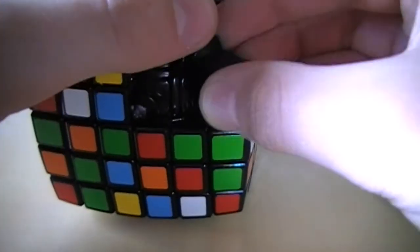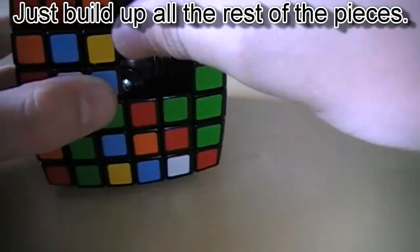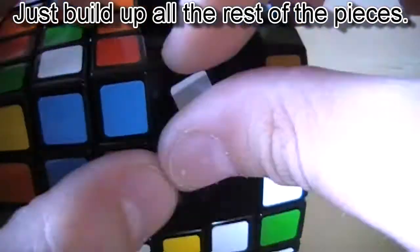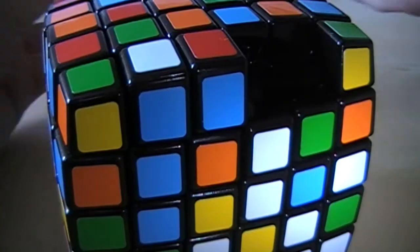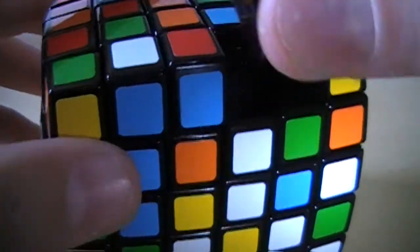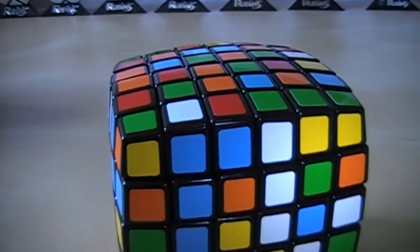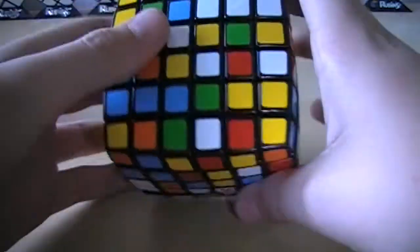And then you can grab the edge pieces. And here we go, we are putting the last pieces in. And there you go, you have your V-Cube 6 back assembled.